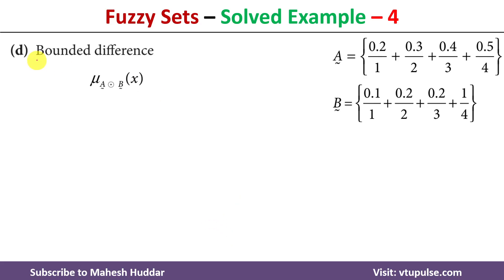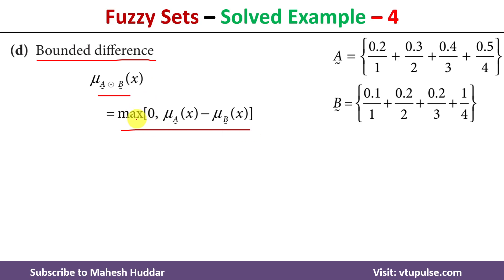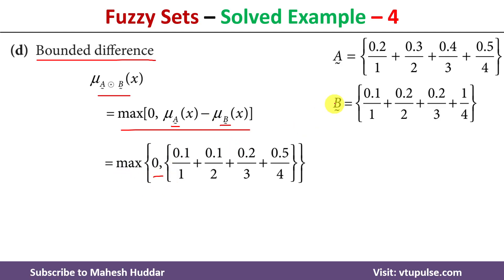The last one is bounded difference, denoted by this symbol. The membership value of x in the bounded difference is calculated as: maximum of 0 and the difference of membership values of x in fuzzy set A and fuzzy set B. We take the difference: 0.2 − 0.1 = 0.1; 0.3 − 0.2 = 0.1; 0.4 − 0.2 = 0.2; 0.5 − 1 = −0.5 here.